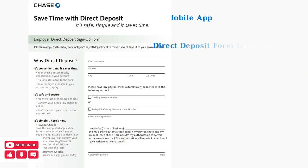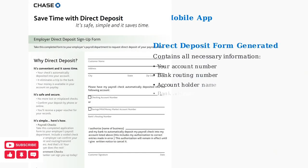Chase will generate a pre-filled direct deposit form that serves as your voided check equivalent. This form contains your account number, routing number, and other essential banking details needed for direct deposit setup.